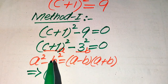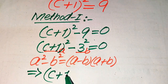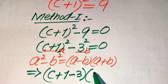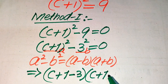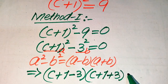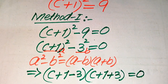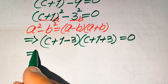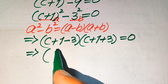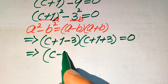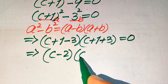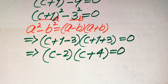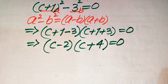According to this formula, we write our equation as the first factor (a − b), where a = (c + 1) and b = 3, giving (c + 1 − 3), and the second factor (a + b), where a = (c + 1) and b = 3, giving (c + 1 + 3), and this whole expression equals 0. In the next step, c + 1 − 3 simplifies to (c − 2) and c + 1 + 3 simplifies to (c + 4).